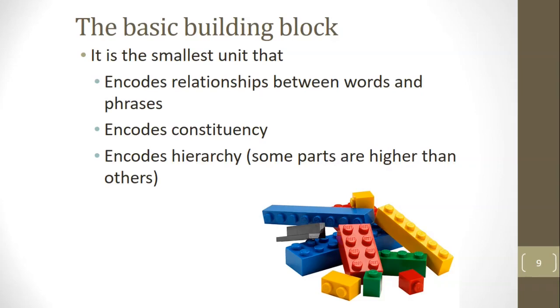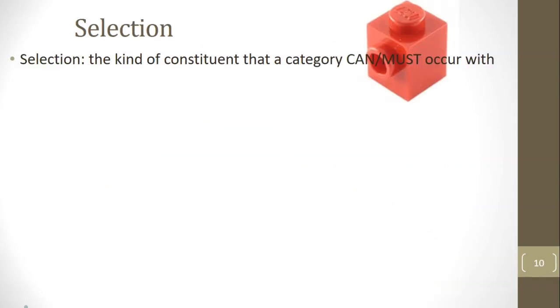So how would we use this small structure to create larger ones? Well, a key element of that is something called selection. Selection is the kind of constituent that a category absolutely must occur with. For instance, a transitive verb like 'like' must have an object. For instance, I like KFC Boxmasters. We call this obligatory complement. We say that 'like' selects a complement of some kind. In this case, it's a noun phrase. Incidentally, the verb 'like' can also select an infinitival clause, as in, I like to eat KFC Boxmasters.